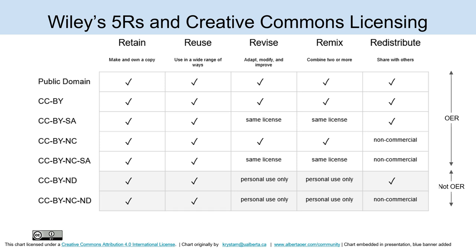This is known as Wiley's Five R's and Creative Commons licensing. It shows along the left-hand side a number of different types of licenses. The foundational open Creative Commons license is CC BY, and it allows other people — if you apply that license to an educational resource — to do all of what are known as the Five R's: retain (make and own a copy), reuse (use it in a wide range of ways), revise (adapt, modify, and improve it), remix (combine two or more resources), and redistribute (share with others).